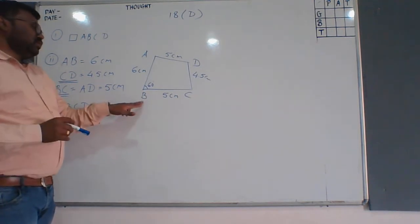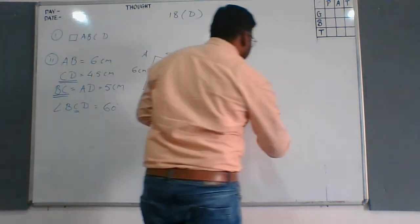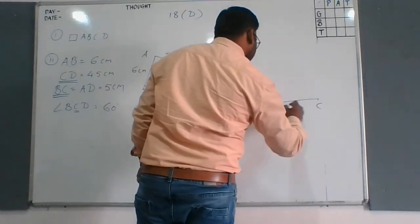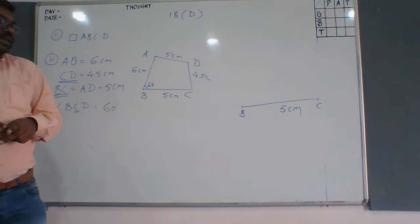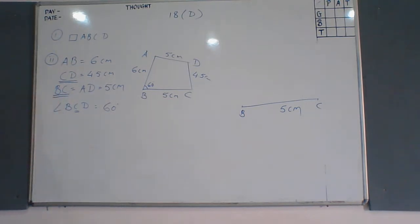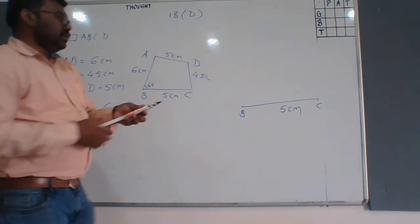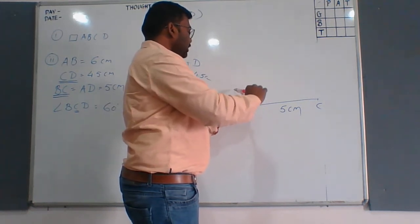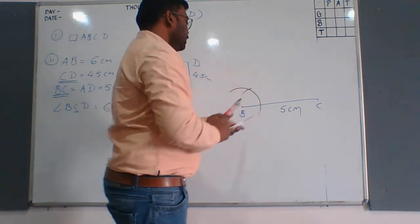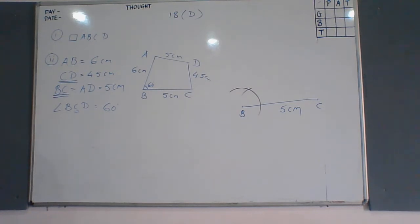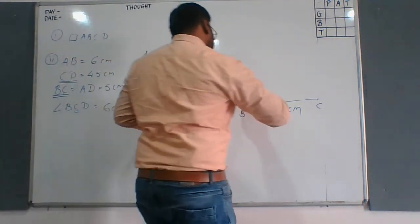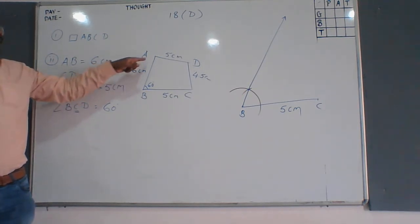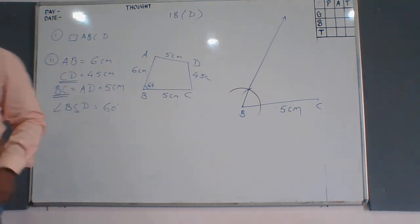First, draw the base BC of 5 cm using the scale. With the help of the compass, construct angle C of 60 degrees. This is the construction for the 60-degree angle. Angle B is 60 degrees.